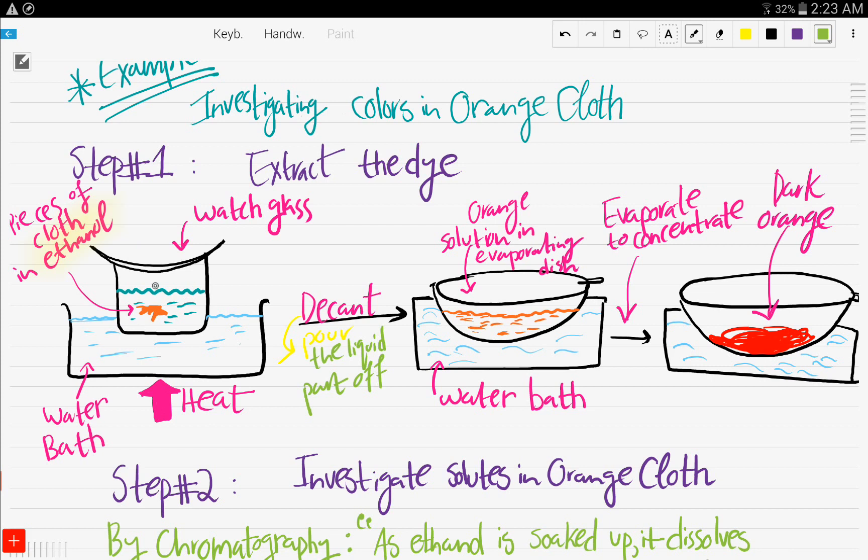So after heating using the water bath, you're gonna have an orange solution with the cloth. No, we just want the solution. So you decant it, take the liquid part and put it in an evaporating dish. And then again using the water bath, you're gonna evaporate to concentrate. And then we're gonna have the dark orange solution.